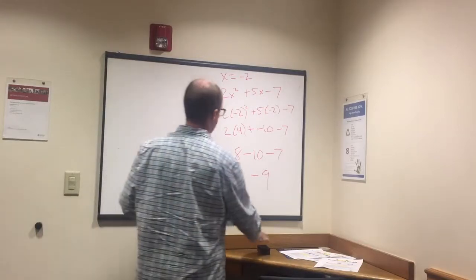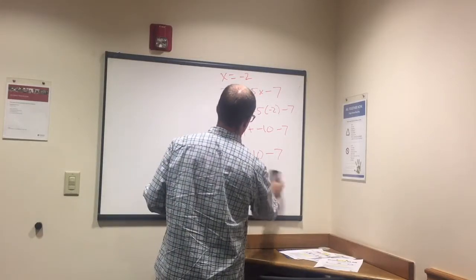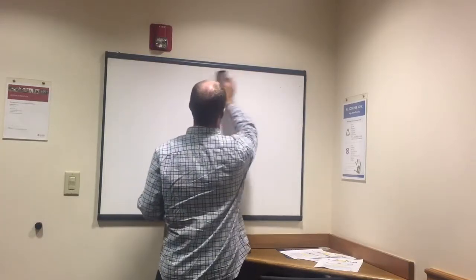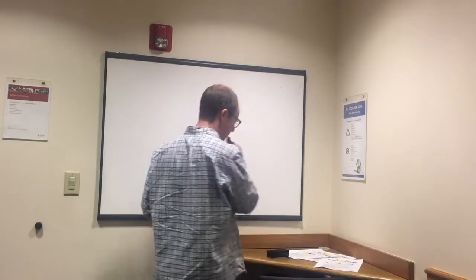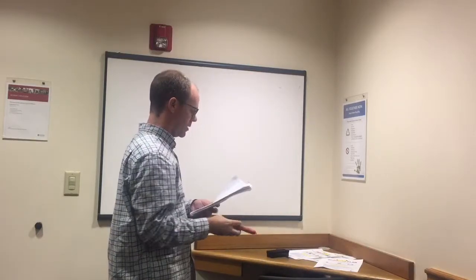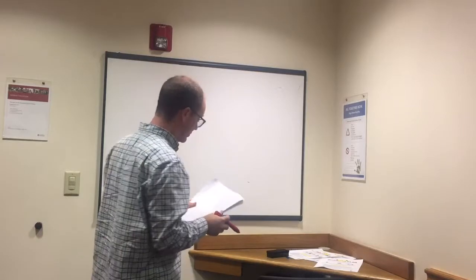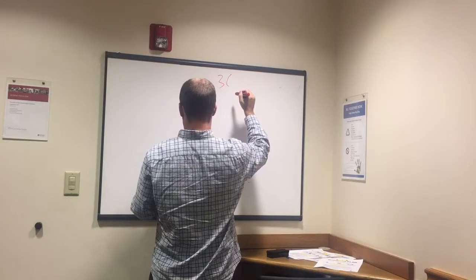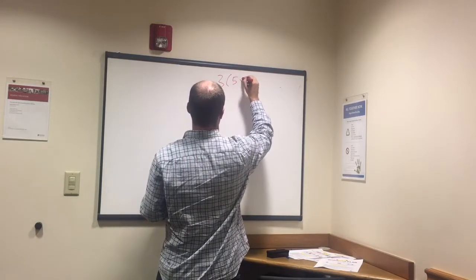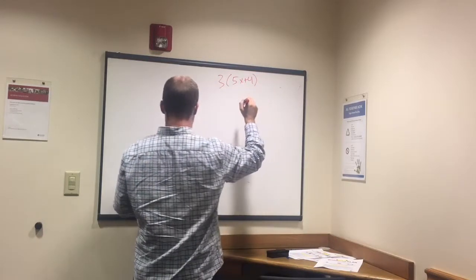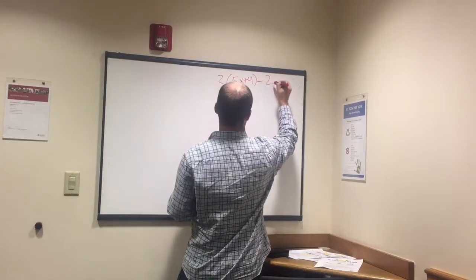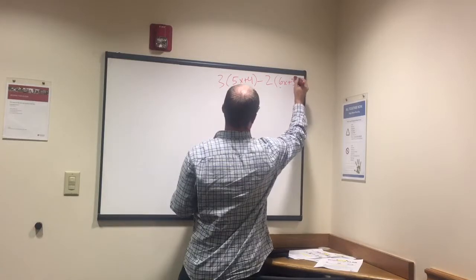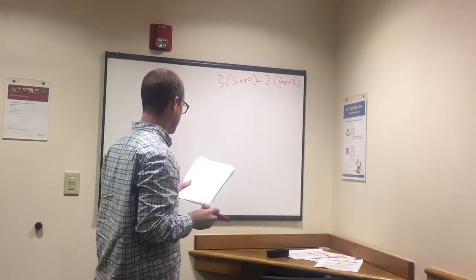So that's plug-in. Next, simplifying an expression. So write this one up here: 3 times 5x plus 4 minus 2 times 6x plus 3.